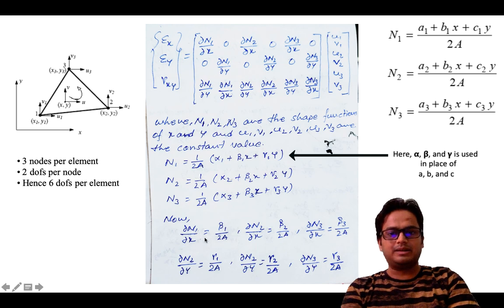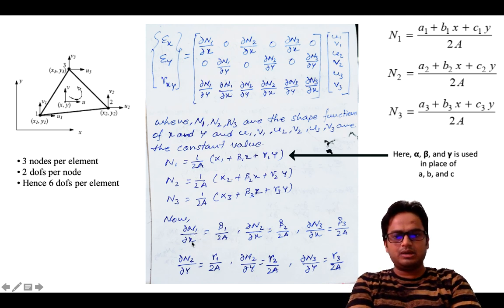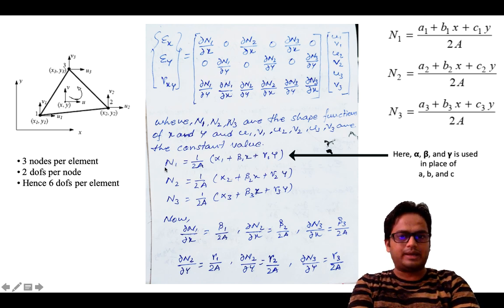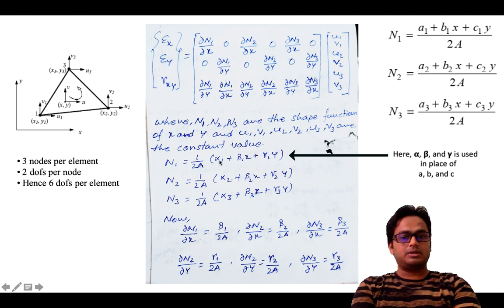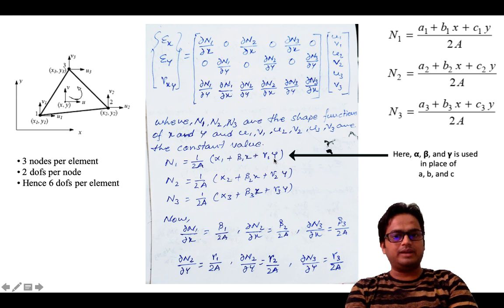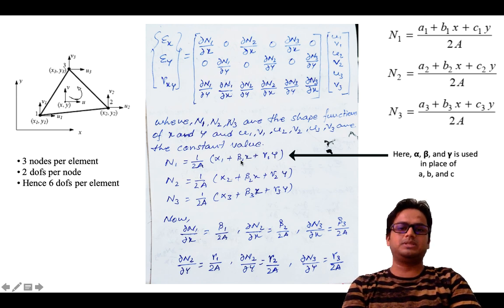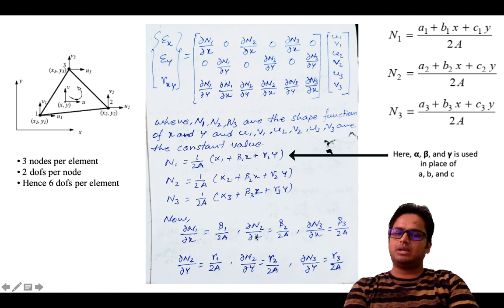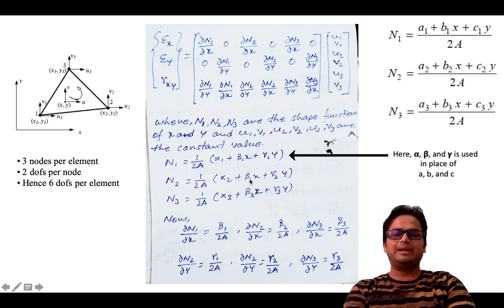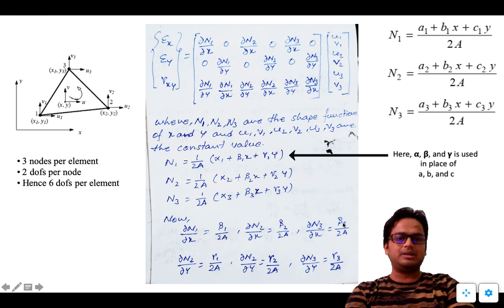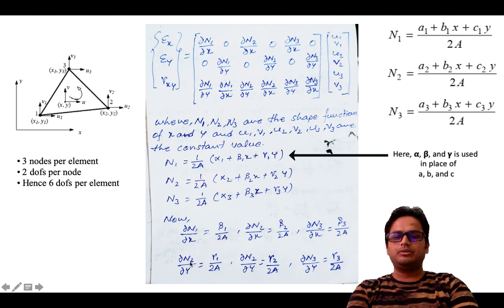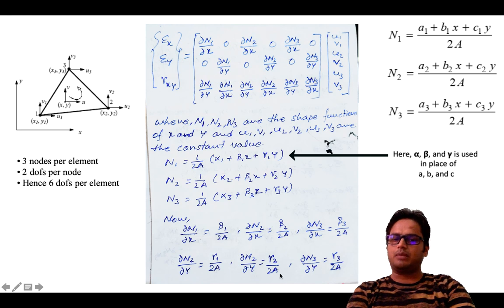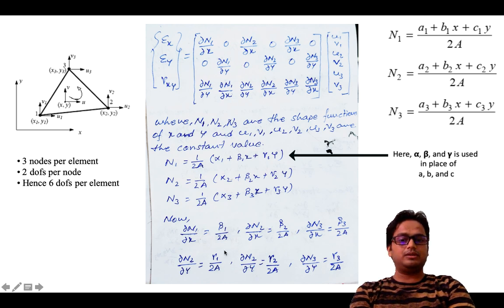Taking dn1/dx: the constant term α1 gives 0, the γ1·y term is treated as constant with respect to x giving 0, leaving only β1·x, so dn1/dx = β1/2A. Similarly dn2/dx = β2/2A and dn3/dx = β3/2A. For the y derivatives: dn1/dy = γ1/2A, dn2/dy = γ2/2A, dn3/dy = γ3/2A.